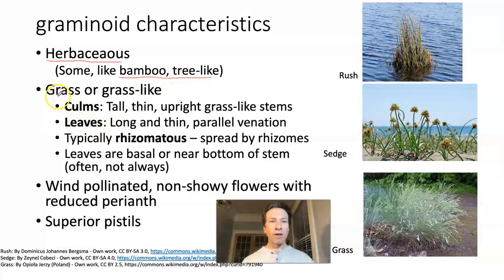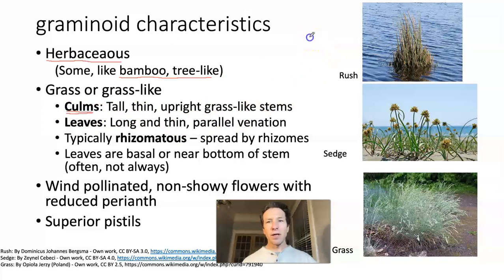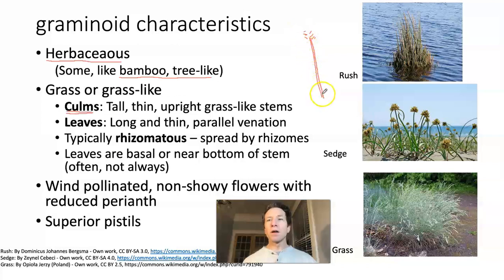They all obviously are either grass or they look grass-like. We introduce a new term: a culm, or plural culms. These are tall, thin, upright, grass-like stems. Think about a flowering stem on a grass plant — the part that has the flower up top. Those are very thin relative to the height that those stems attain.